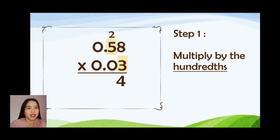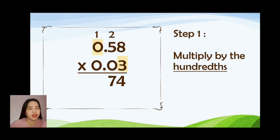Next is 5 times 3, so the answer will be 15 plus 2, which is 17. And the last one is 0 times 3. The answer will be 0, because any number multiplied by 0 will always be 0. Added by 1, we will have the answer of 1.